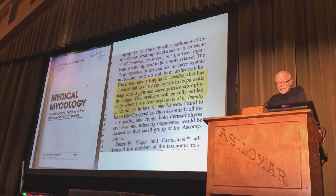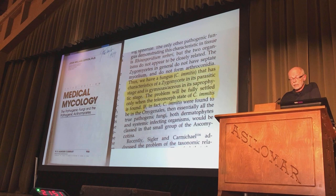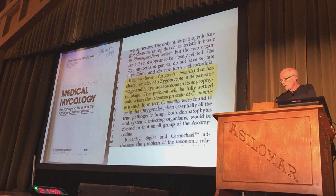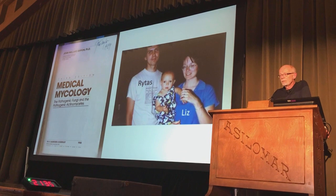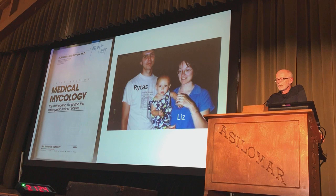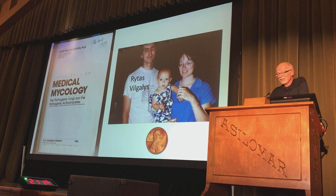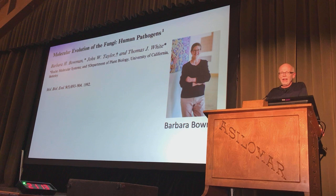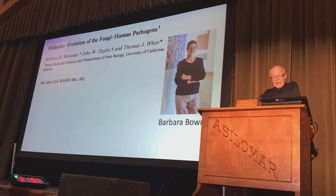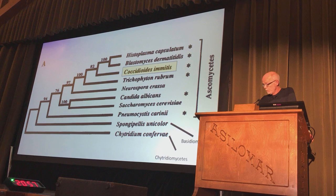Here we have a fungus, Coccidioides immitis, that has characteristics of a zygomycete in its parasitic stage and a gymnoascaceous ascomycete in its saprophytic stage. The text said the problem would be fully settled only when the teleomorph state of C. immitis is found. It turns out that other people have prepared minds too. Reedus Vilgalys confided to me some years later that he had submitted a grant for the same idea but missed the deadline. That NIH grant that Tom White and I had led to hiring Barbara Bowman, who had just graduated with a PhD from Alan Wilson at Berkeley.